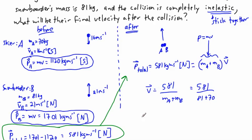So let's actually just solve for the final velocity. So the final velocity is going to be, well, 581, let's see, we have 81 plus 70, that's going to be 151, and I just need to do that on my calculator.